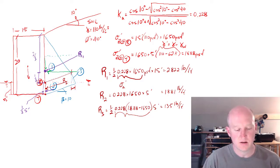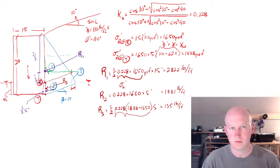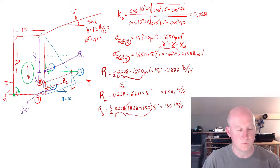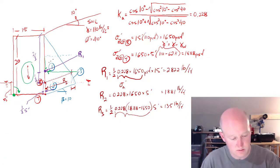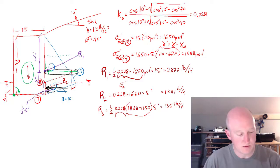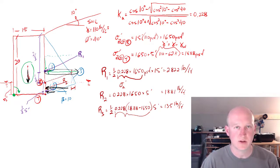Later we need to take all of these forces — there are six total: R1, R2, and R3 each broken into horizontal and vertical directions. We put those into a sum of forces to see if the big immovable object would slide, and then a sum of moments about the toe. The driving forces are the horizontal resultants, and the resisting forces include the weight. We'll do factor of safety analysis like that next.